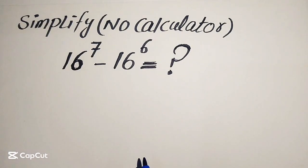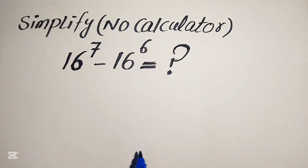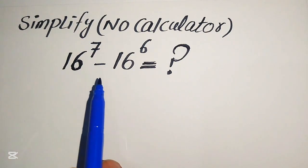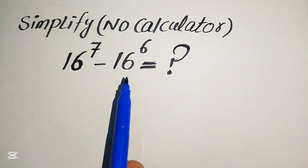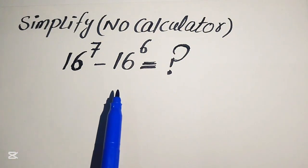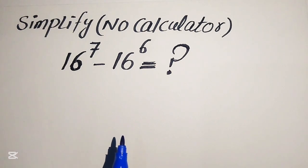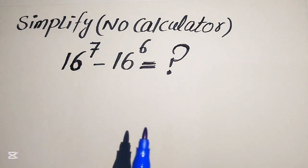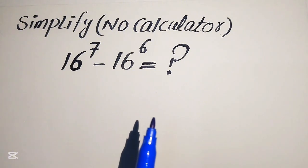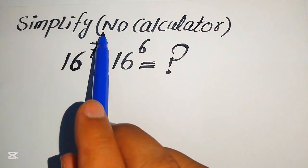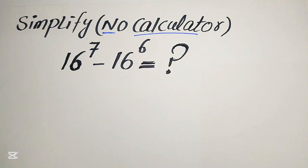Hello everyone, today I want to show you how to simplify this algebraic expression without using a calculator. We have 16 to the power of 7 minus 16 to the power of 6. I hope you like this method, but if you have another method in mind, please write it in the comment section. Remember, the calculator is not allowed in this problem.